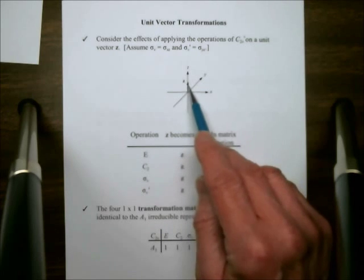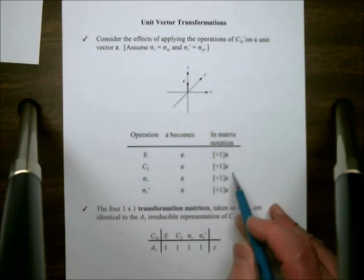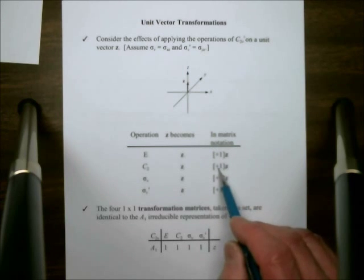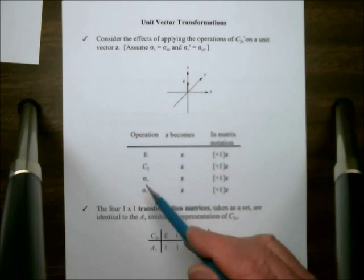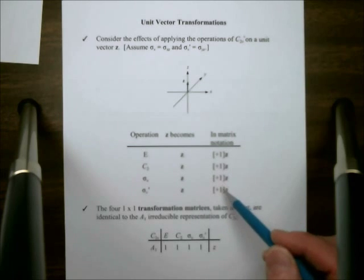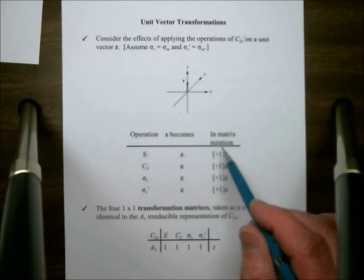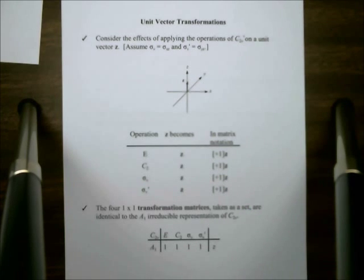C2 just spins the vector around itself. That doesn't change it in any meaningful way. So plus one z is the product here. And sigma v and sigma v prime have the same result. So I have a plus one and a plus one here. If we take the four operator matrices, one for each of the operations of the group, and gather them together, they become the characters of a representation in C2v.